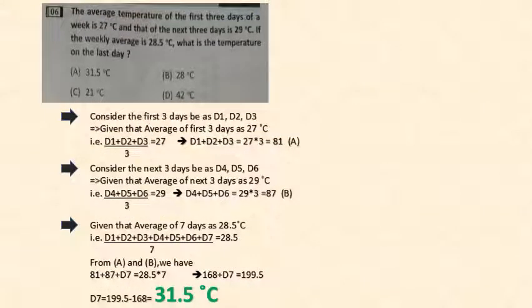In this question they have mentioned about the average temperature of first 3 days is 27. So let us take D1, D2, D3 as first 3 days and their average is equal to 27. And the sum of these 3 days is equal to 81 from the given statement. The next one is the average of next 3 days that is D4, D5, D6 is equal to 29. And from that we get the sum of the 3 days equal to 87. Next one given is weekly average as 28.5. So we have D1 to D7 days as 7 days to be considered for the week. D1, D2, D3, D4, D5, D6, D7 by 7 equal to 28.5. From statements A and B substitution in the given one we get the D7 equal to 31.5 degrees Celsius.